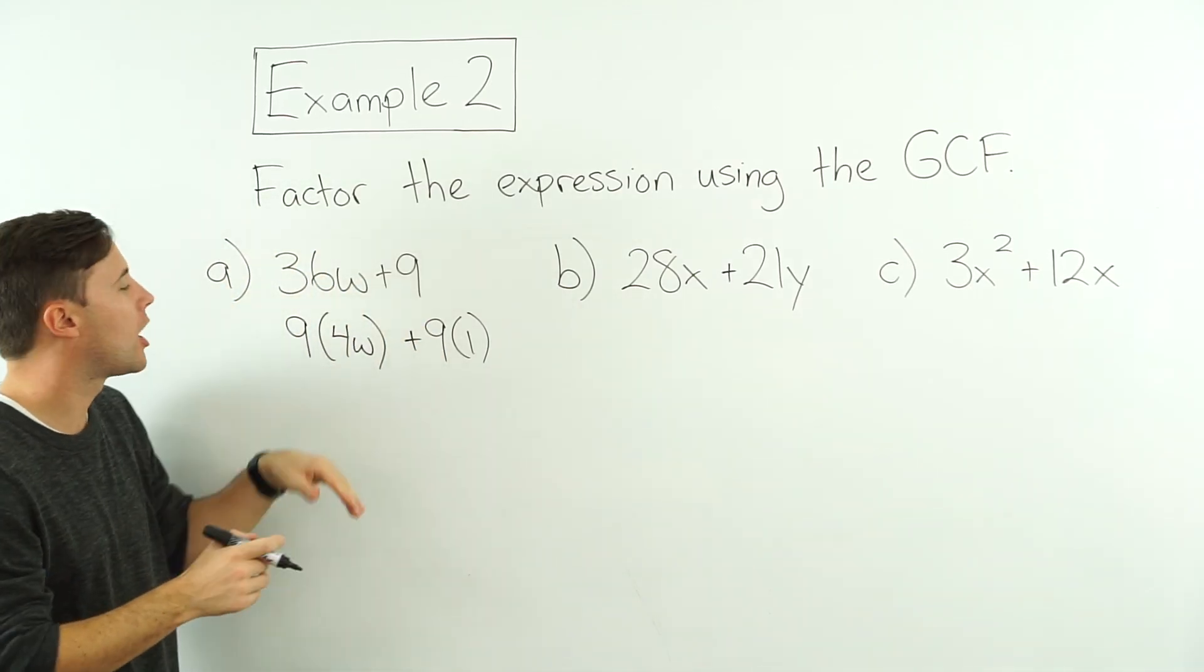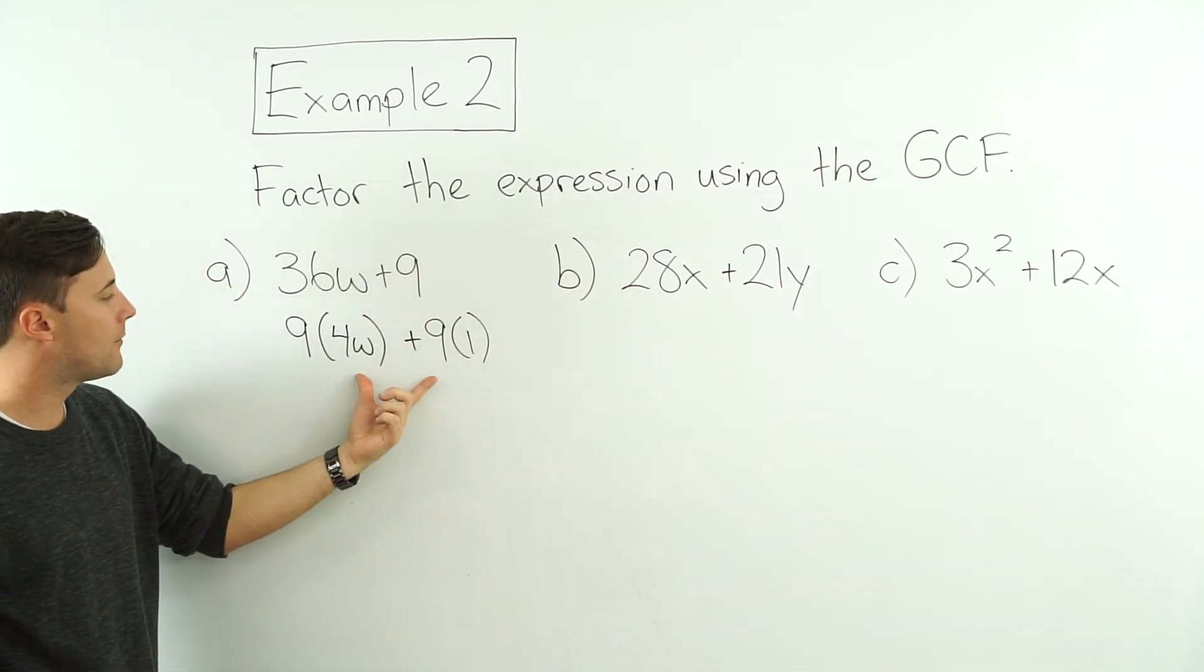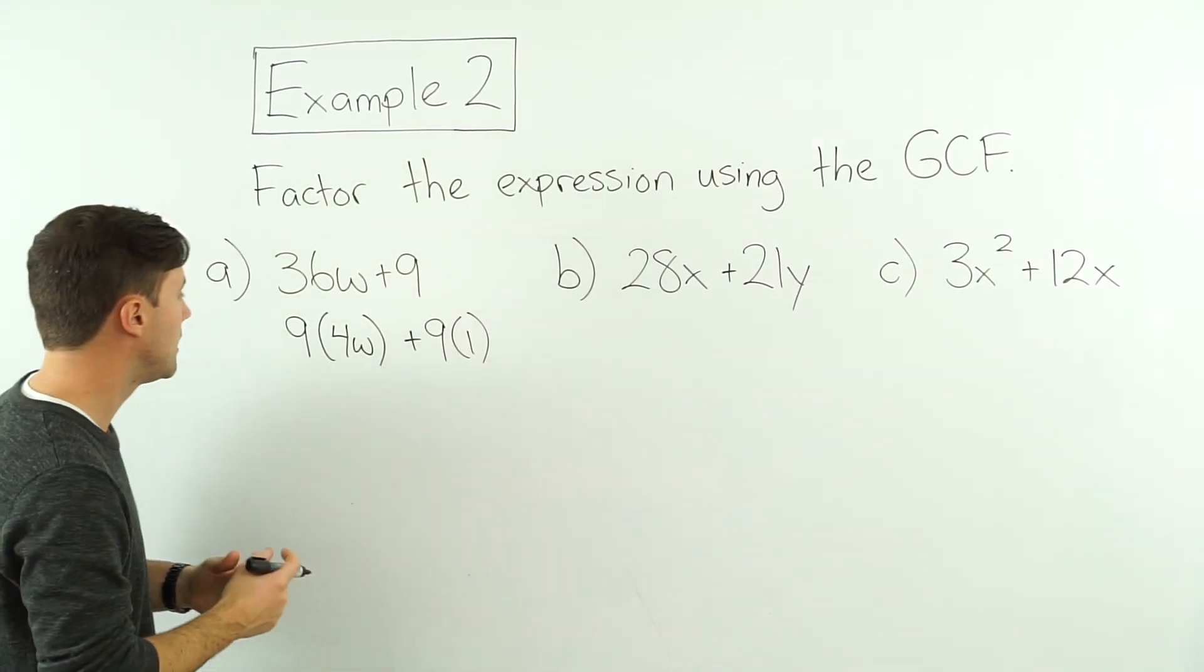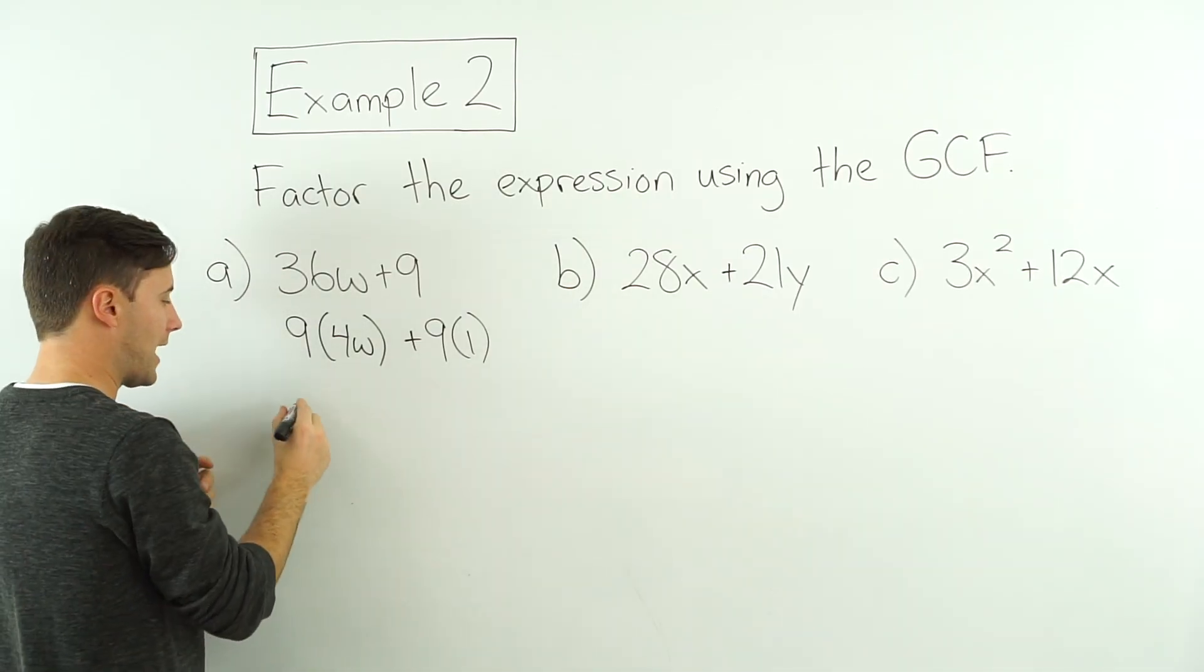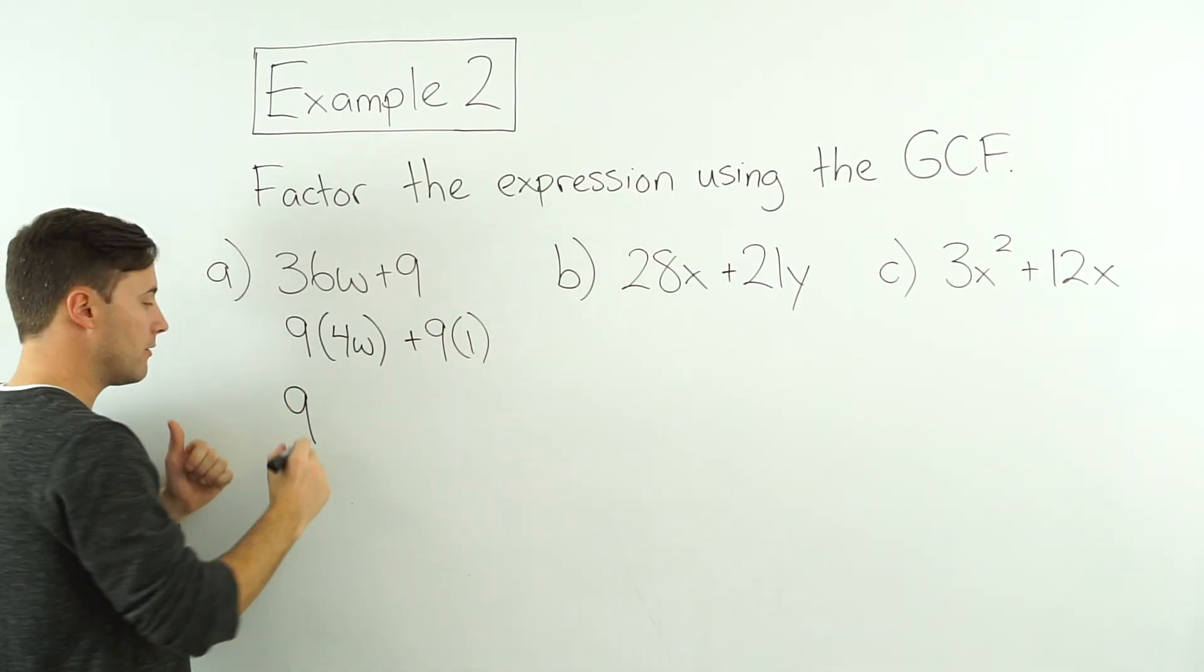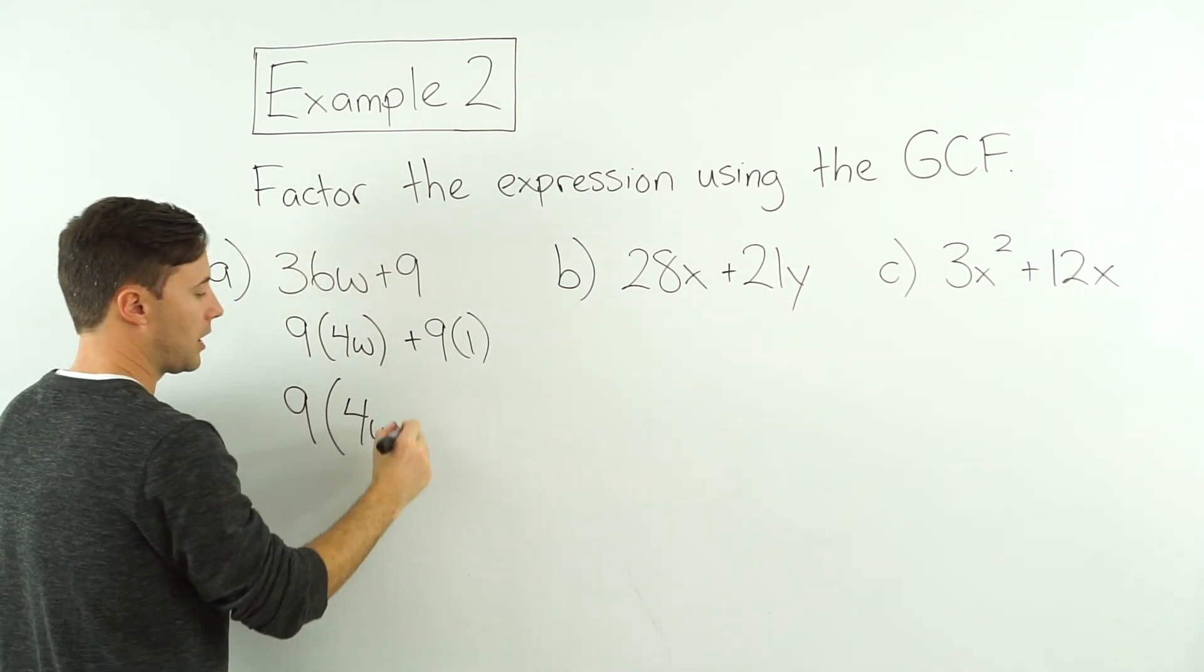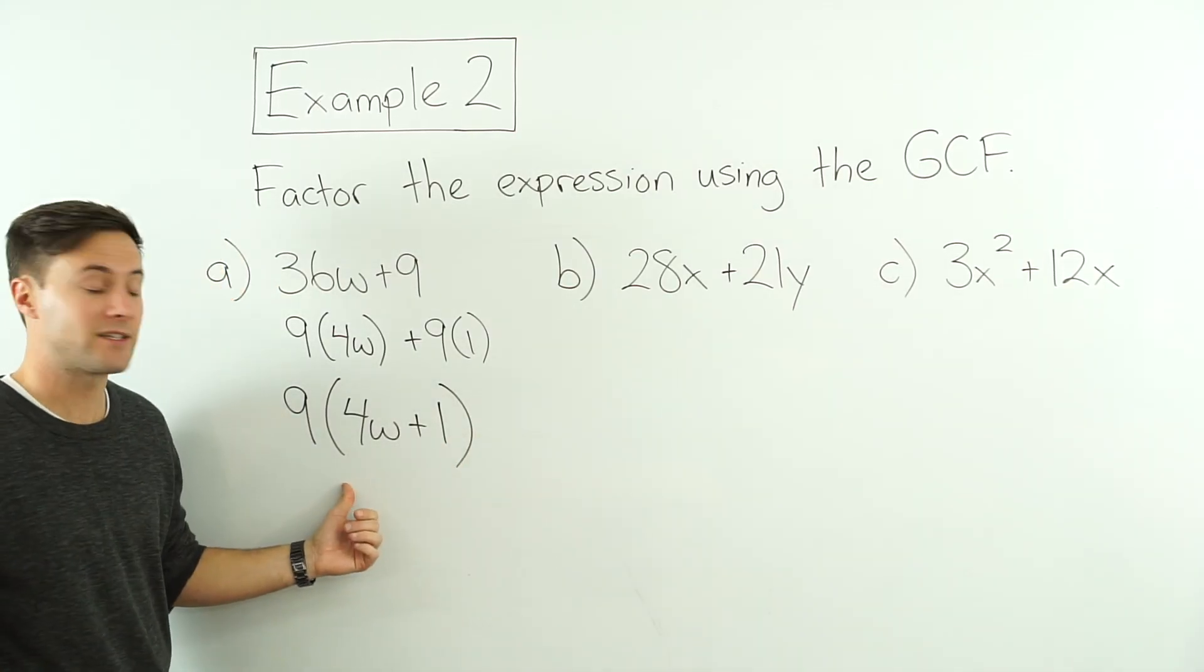And as you go along, you probably won't have to do this step. Hopefully you'll be able to do it in your head. But for now, let's just write it down so it helps. I factor out that 9. I'm dividing both terms by that 9. That comes out. So what's left over? Well, I've got the 4w plus the 1. And that is factored.